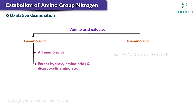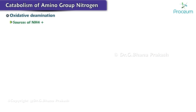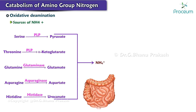The D-amino acid oxidase functions during the degradation of D-amino acids of bacterial origin that are absorbed from the gut. Both enzymes are present in the liver and kidneys, localized in peroxisomes where they generate hydrogen peroxide. In addition to glutamate, amino acids like serine, threonine, glutamine, asparagine, and histidine release NH4+. A major source of NH4+ is bacterial metabolism in the intestinal lumen, where it is transported to the liver. Urea is also cleaved by the urease enzyme into NH4+.